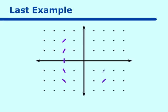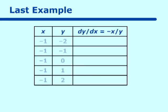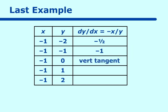Going back to our chart and putting in x equal to negative 1 with y values negative 2, negative 1, 0, 1, and 2: we get negative one half, negative 1, a vertical tangent, 1, and one half for our dy/dx. And then for x equal to 1, it's the same slopes only positive. So we can add those in as well, except for that vertical tangent.